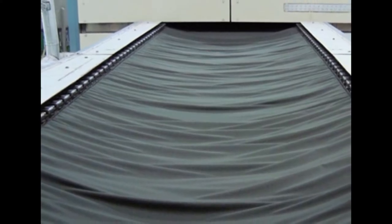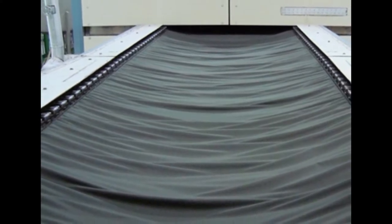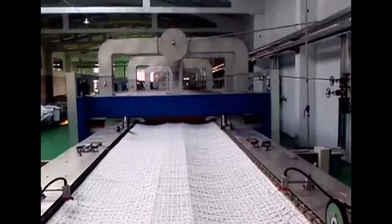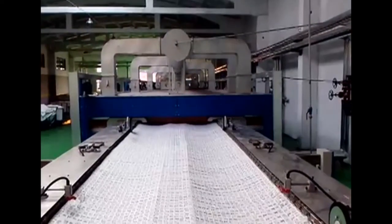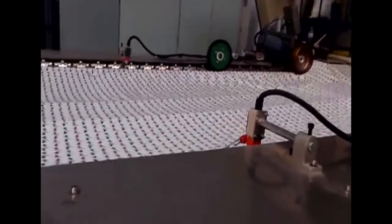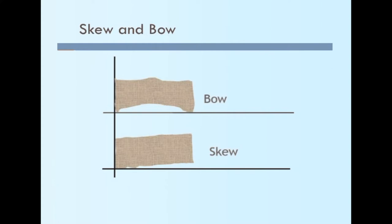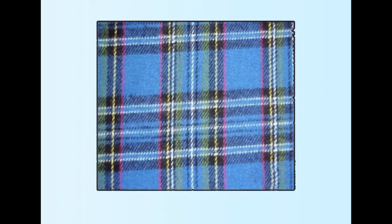In finishing, skewness is greatly seen on the tentering frame, where the wet fabric is chained on both sides of the machine. When the attachment is done such that one side is pulled off at 90 degrees, or when the chains on the machine move at different speeds, skewness results. Both bow and skewness are very displeasing visually; they are more apparent in colored fabrics and very prominently seen in patterned fabrics like plaids and stripes.